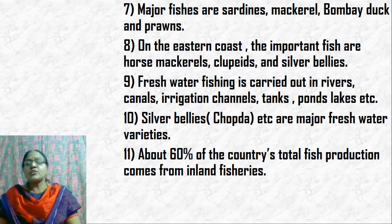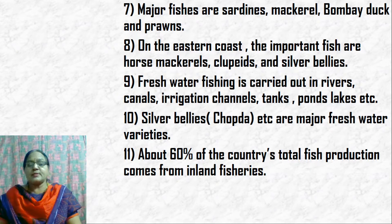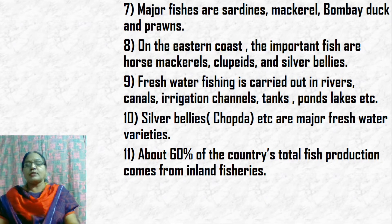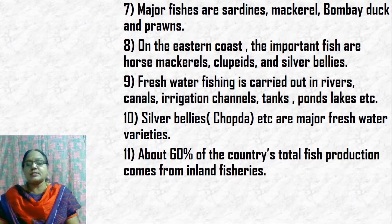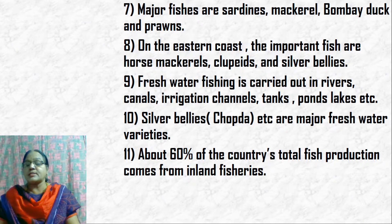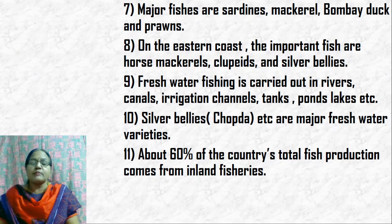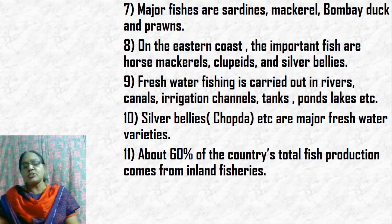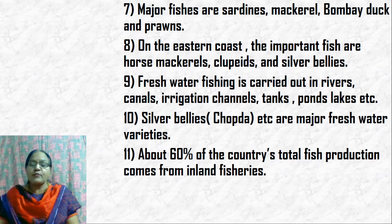Freshwater or inland fishing is carried out in rivers, canals, irrigation channels, tanks, ponds, and lakes on a small scale. Major freshwater fish varieties include silver bellies and chopra. Inland fishing accounts for 60% of the country's total fish production, whereas marine fishing accounts for 40%.